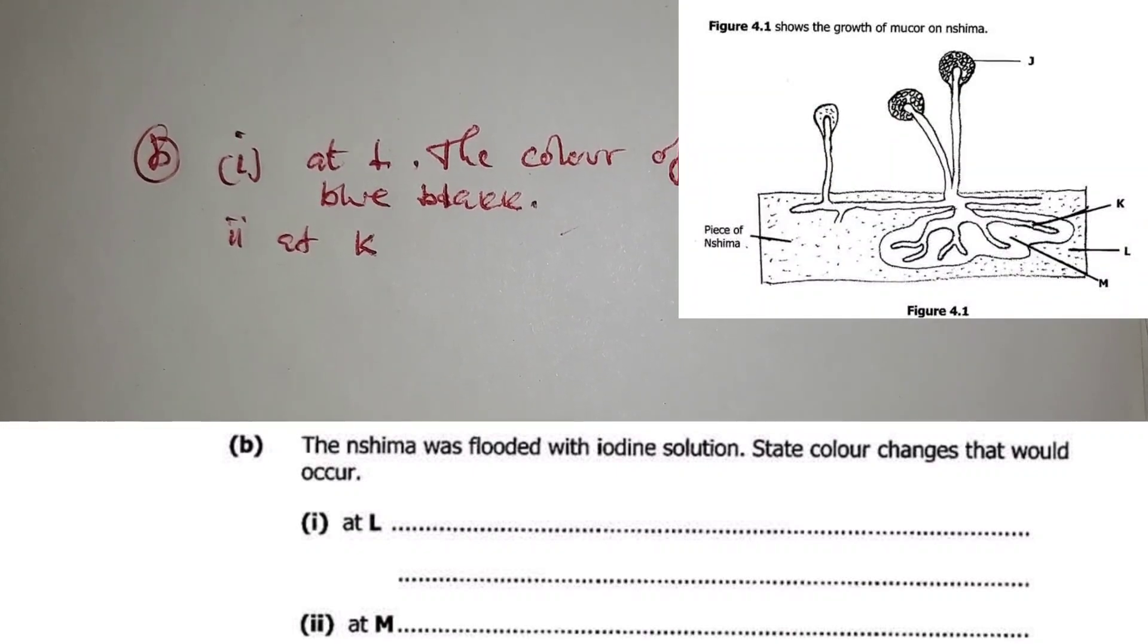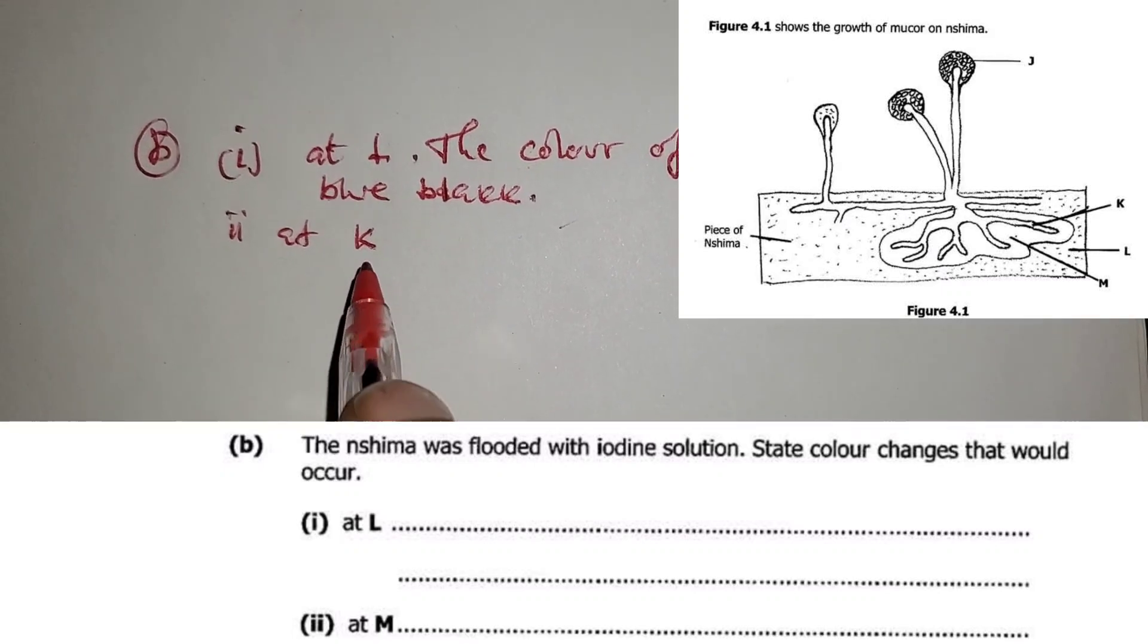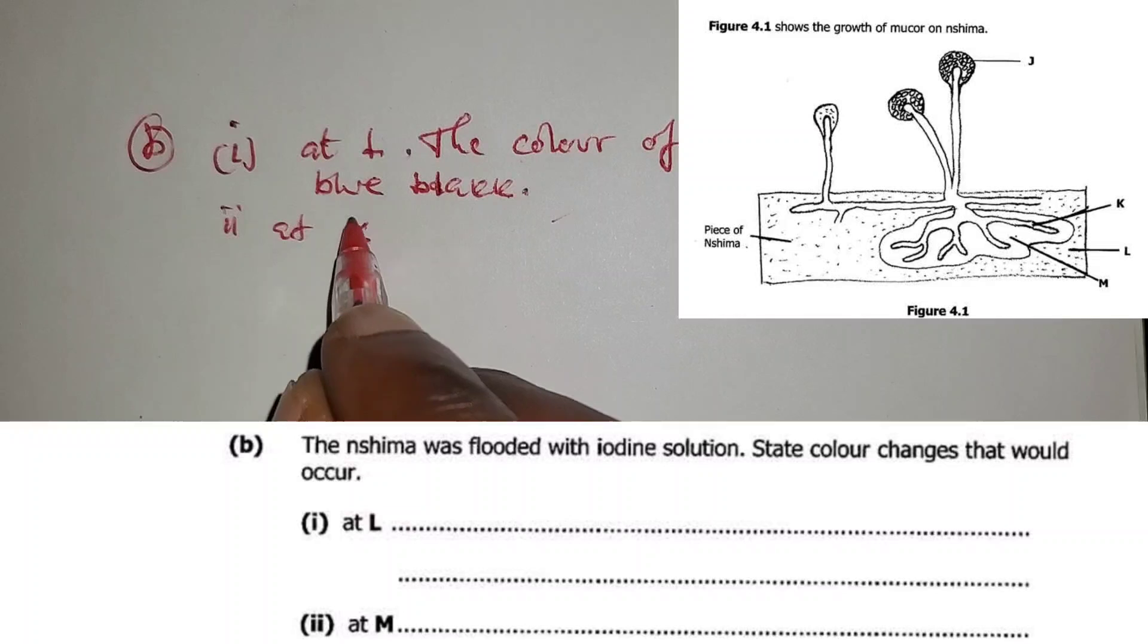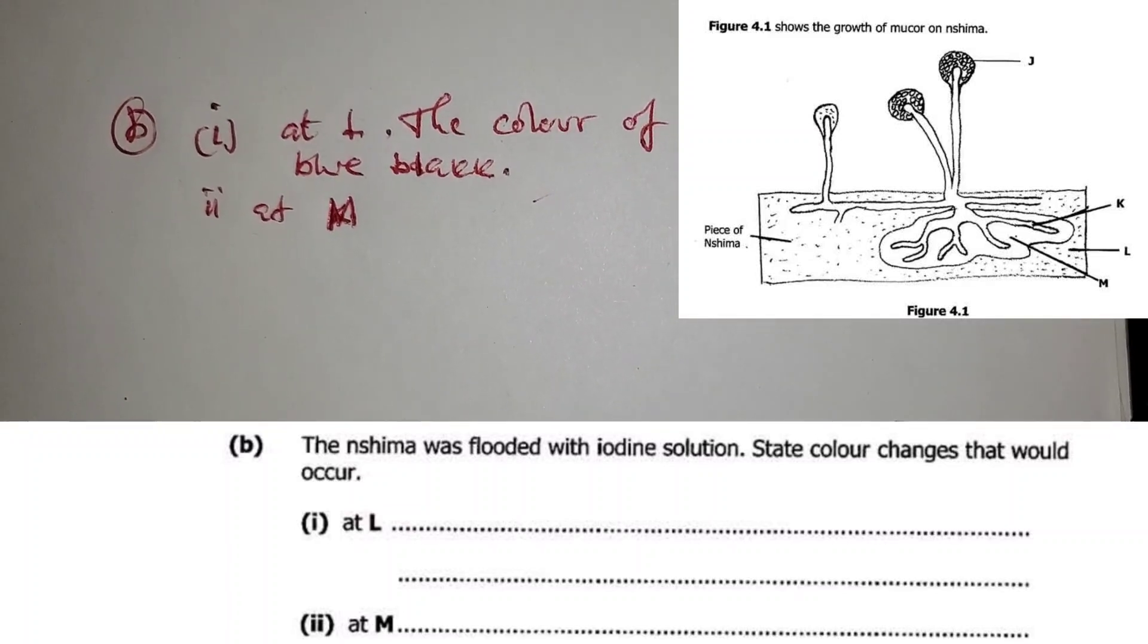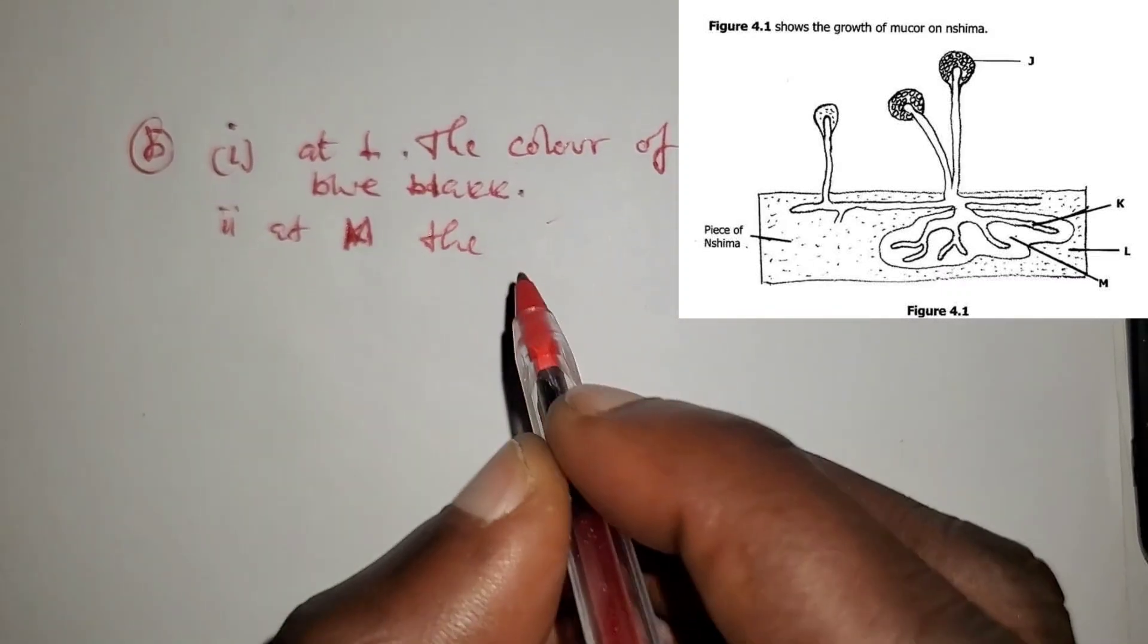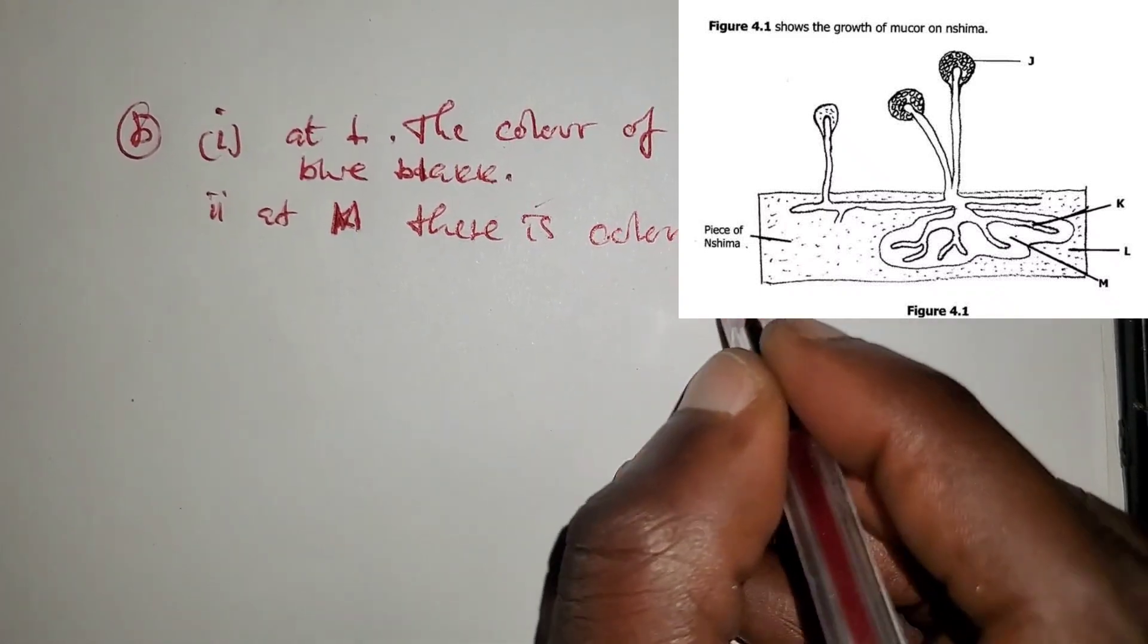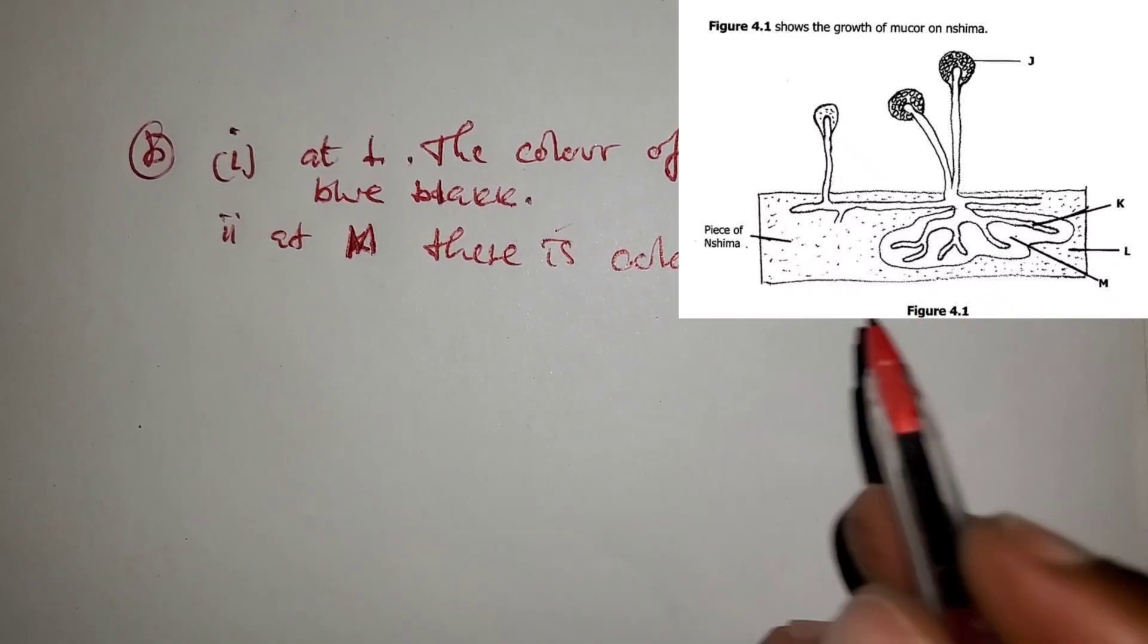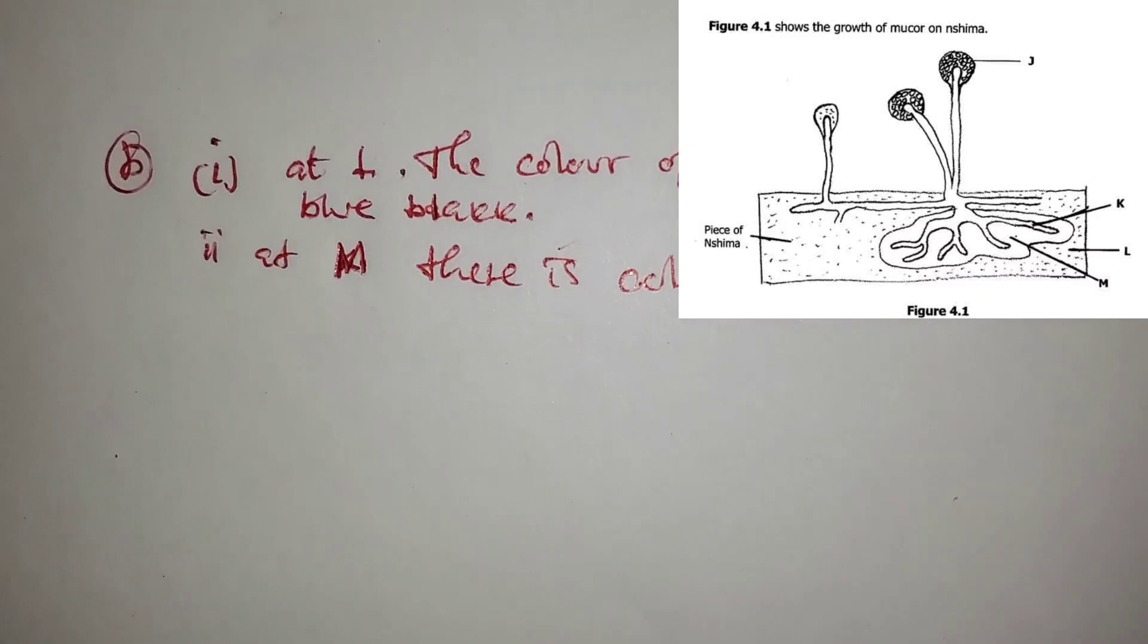At M, there is no color change. The color of iodine solution just remained the way it is, yellowish brown or just brown.